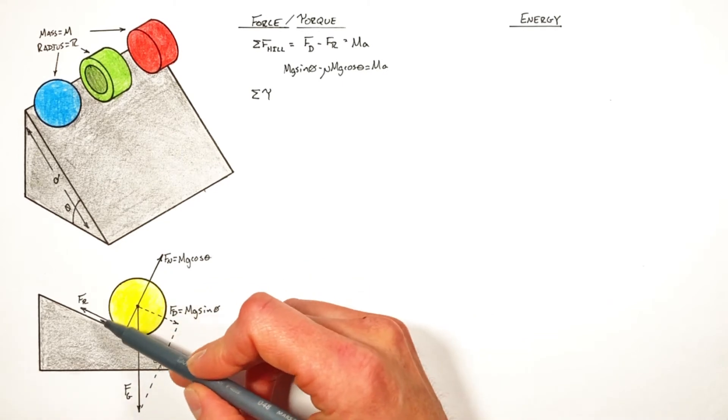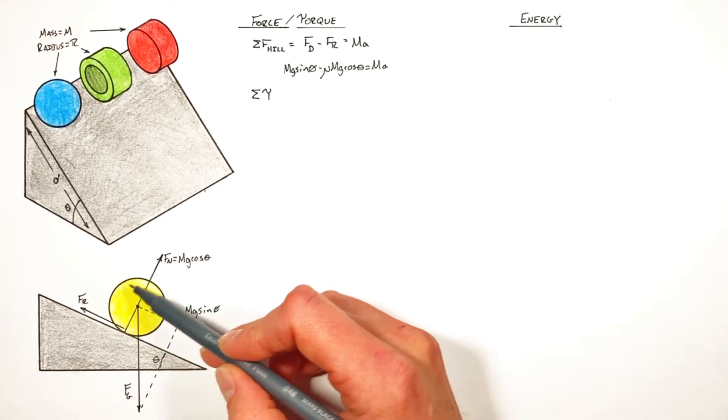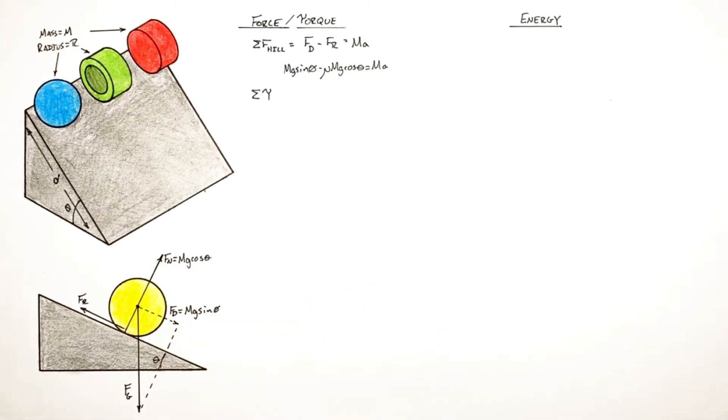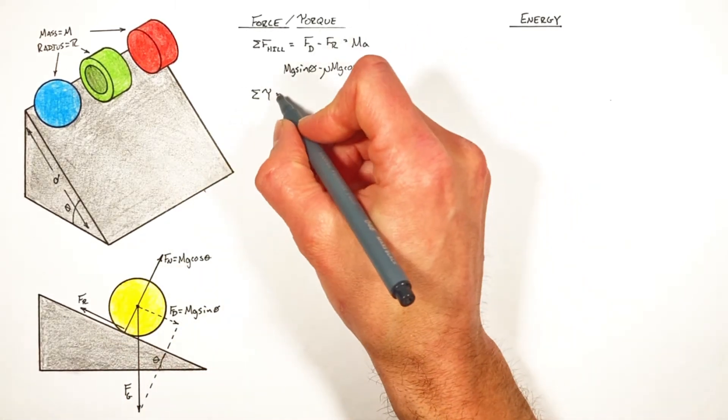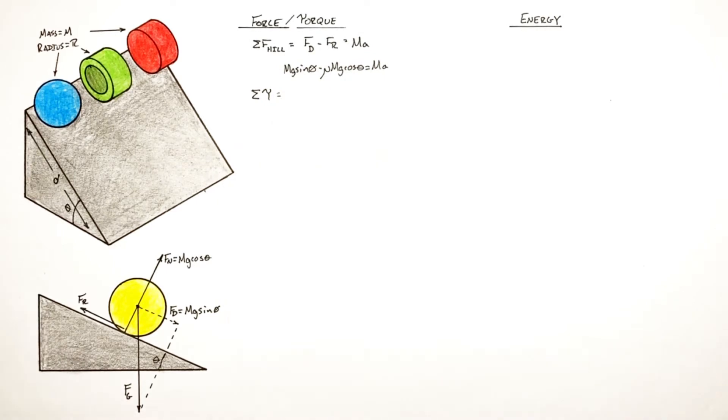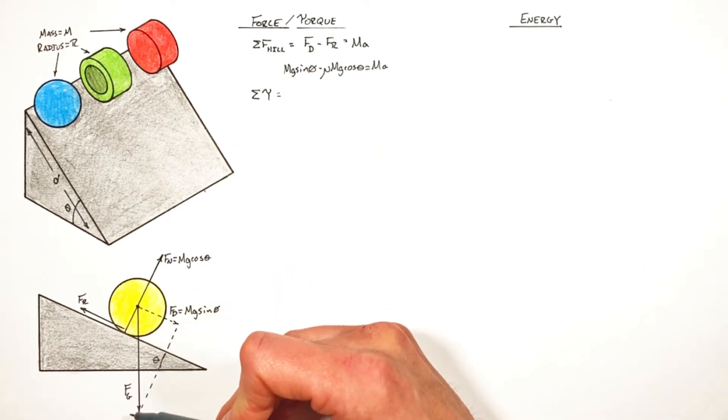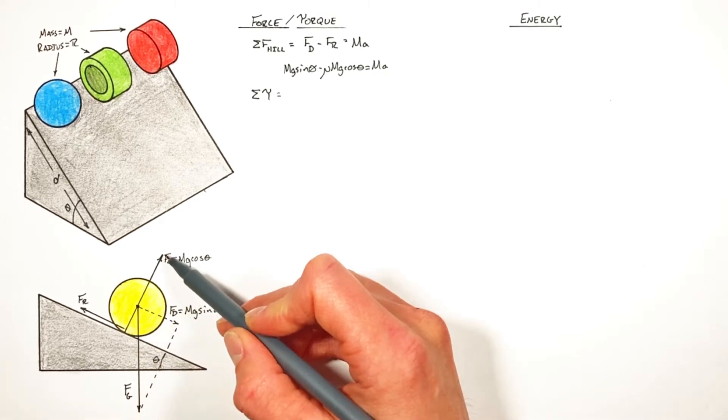So each of these forces is potentially producing a torque around the center of this object. So we're going to look at each force individually to figure out just how much torque they're actually producing. Now gravity is acting right at the center of this object, so it's not producing any torque, and neither is the normal force.